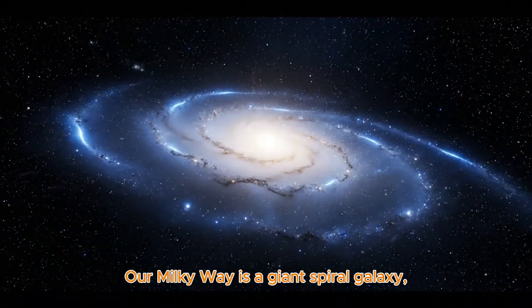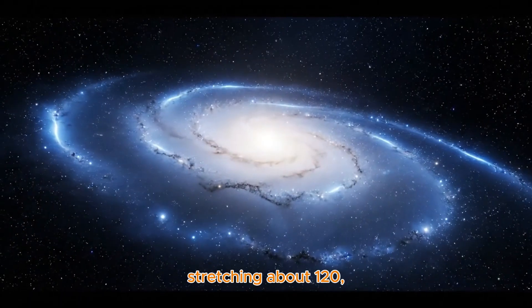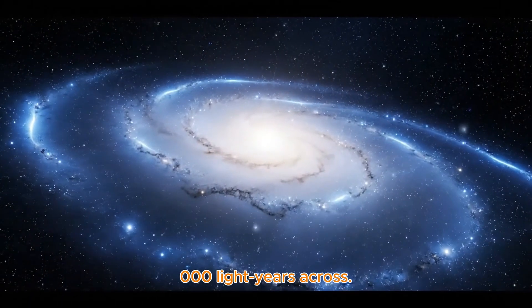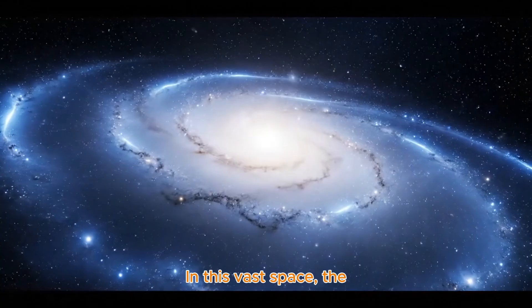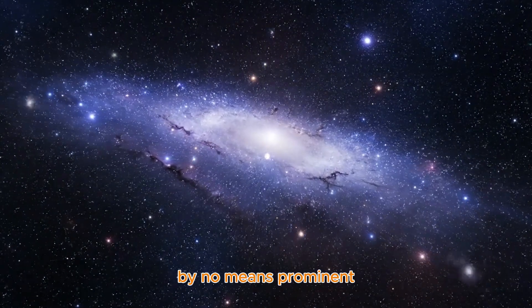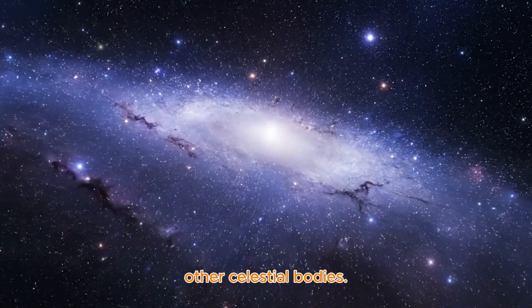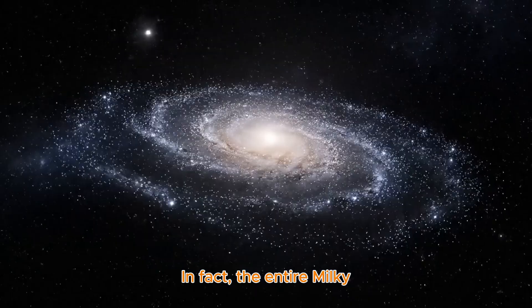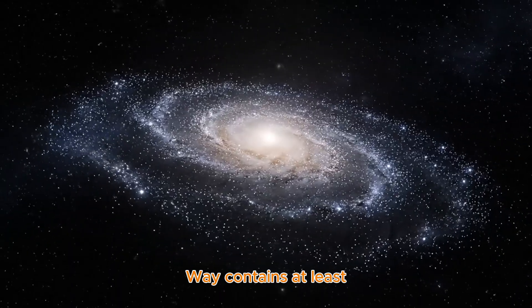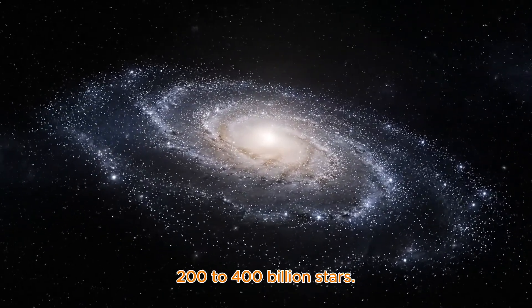Our Milky Way is a giant spiral galaxy, stretching about 120,000 light years across. In this vast space, the Sun is just an ordinary star, by no means prominent compared to countless other celestial bodies. In fact, the entire Milky Way contains at least 200 to 400 billion stars.